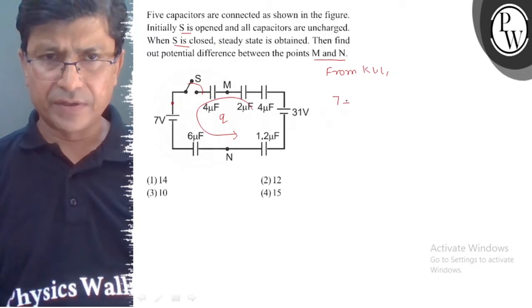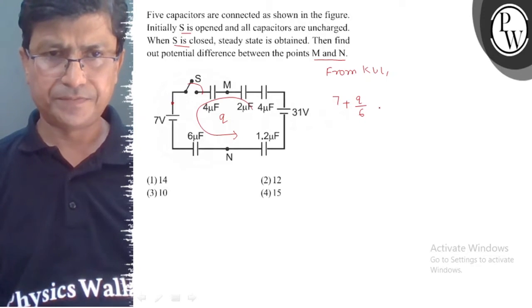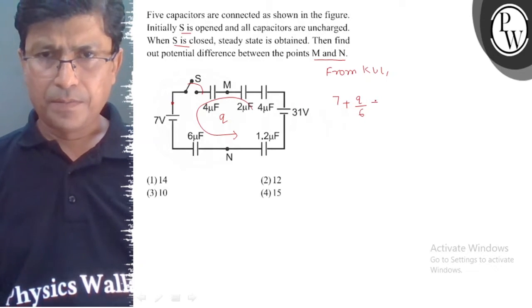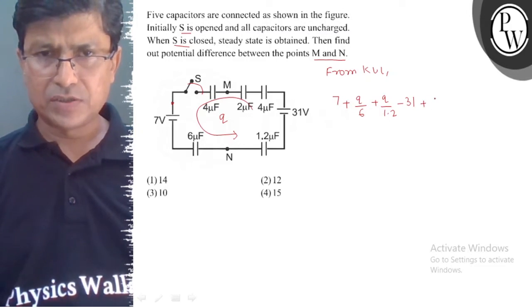plus 7 plus Q by 4 plus Q upon 1.5 minus 31 plus Q by 4 plus Q by 2